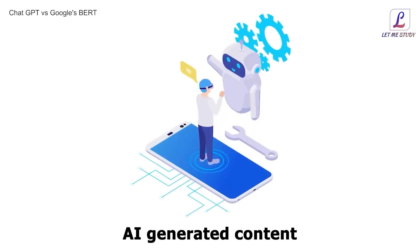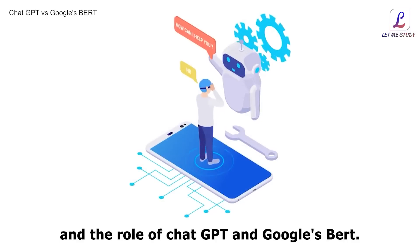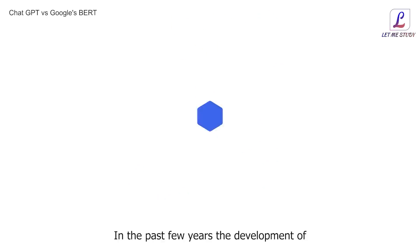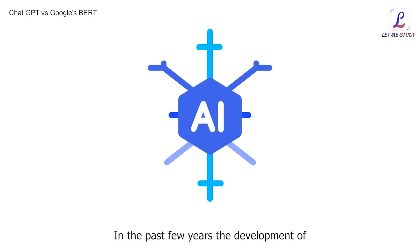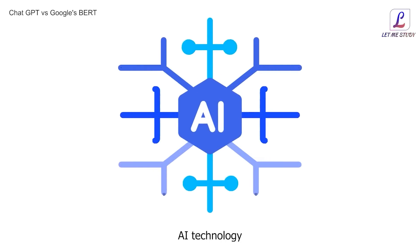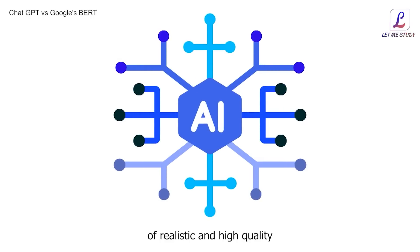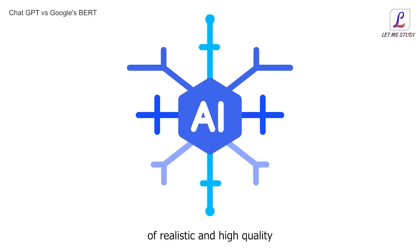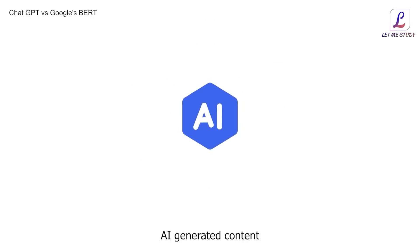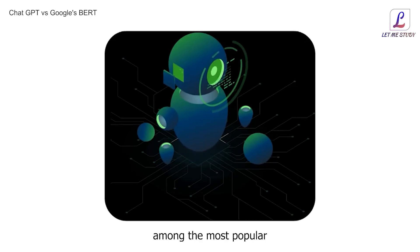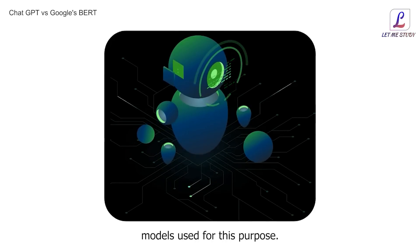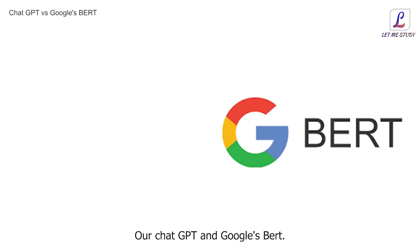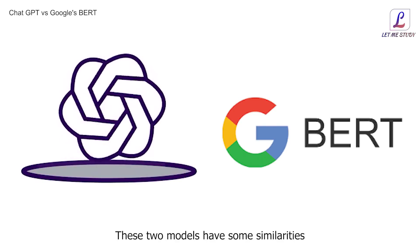AI-generated content and the role of ChatGPT and Google's BERT. In the past few years, the development of AI technology has allowed the creation of realistic and high-quality AI-generated content. Among the most popular models used for this purpose are ChatGPT and Google's BERT.